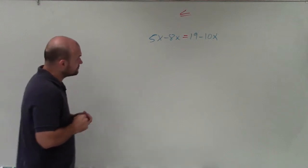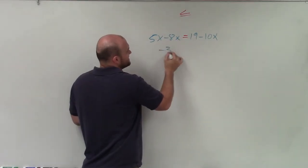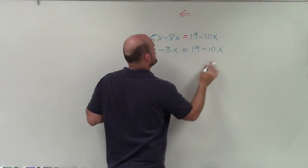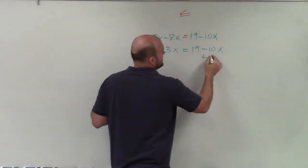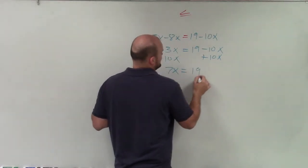So what I'll do here is I'll combine these terms. So I have 5x minus 8x is negative 3x, equal to 19 minus 10x. Now, to get my variables to the same side, I'll add 10x on both sides. And I get 7x is equal to 19.